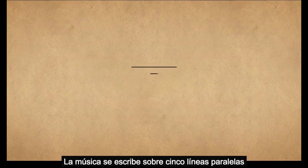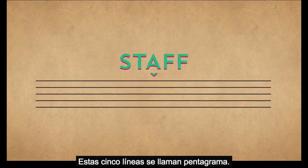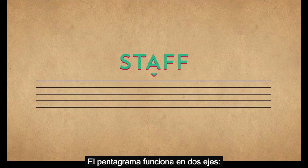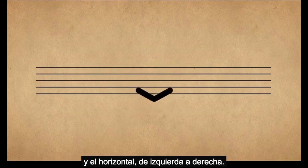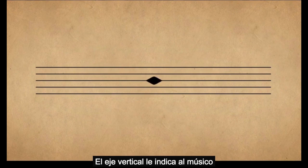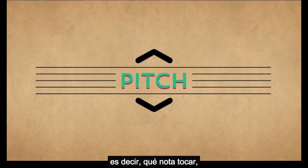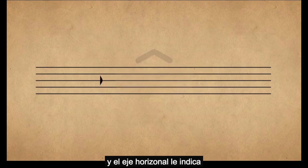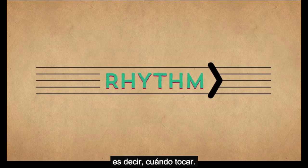Music is written on five parallel lines that go across the page. These five lines are called a staff, and a staff operates on two axes: up and down, and left to right. The up and down axis tells the performer the pitch of the note, or what note to play, and the left to right axis tells the performer the rhythm of the note, or when to play it.